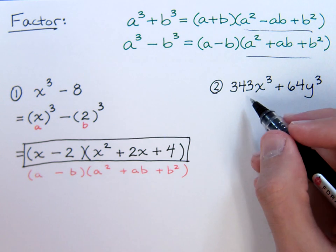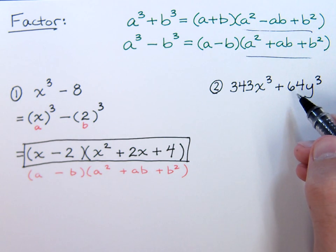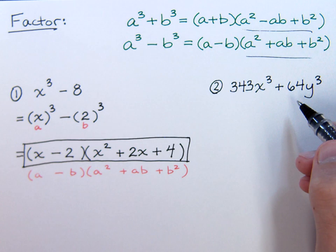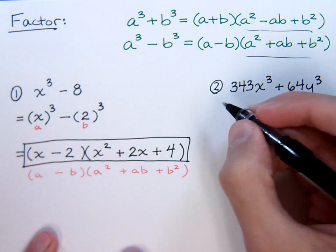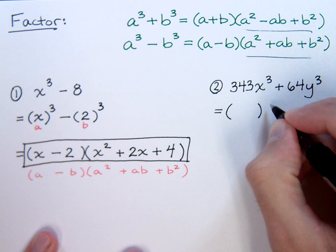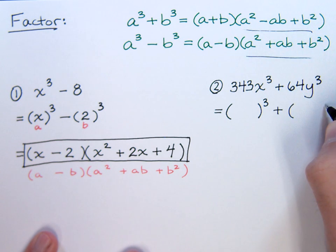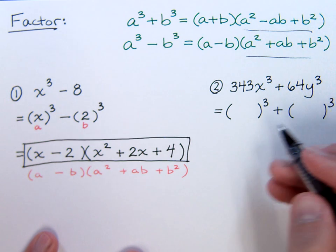Now let's look at the second problem that we have. Some of these numbers are starting to get kind of large, but if you make your list of squares and cubes and other higher powers, it's going to be a lot easier to recognize where these come from. So since I've had the practice, I can tell you that this is going to be a perfect cube, and this other one is also going to be a perfect cube.